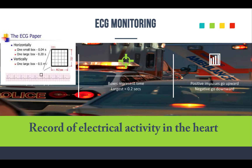Those boxes that you'll see on the paper represent time. As you can see in the graphic, your largest box is 0.2 seconds and the small boxes are 0.04 seconds. This ties in when you're trying to measure QRS complexes and P-to-R intervals. This is key content — you will probably see questions asking what EKG boxes represent and how long each box is, so keep that in mind.